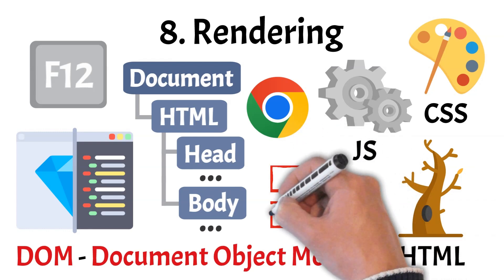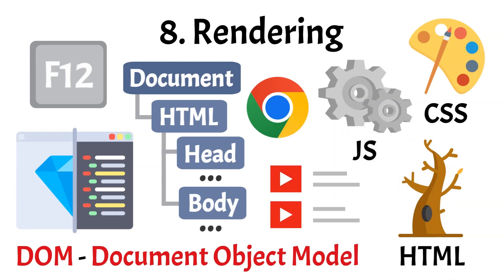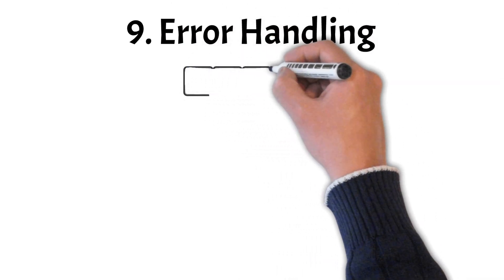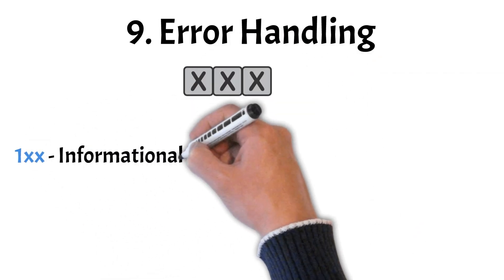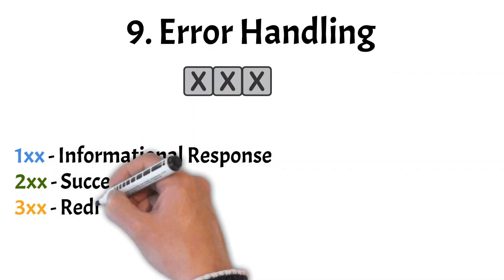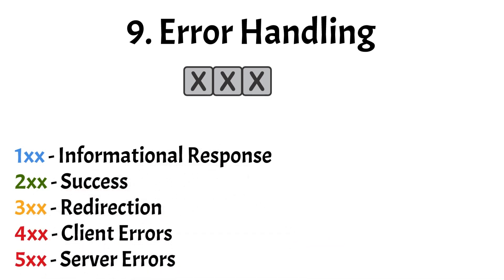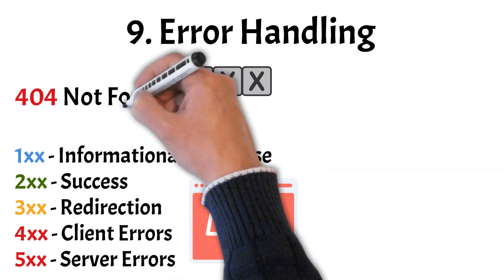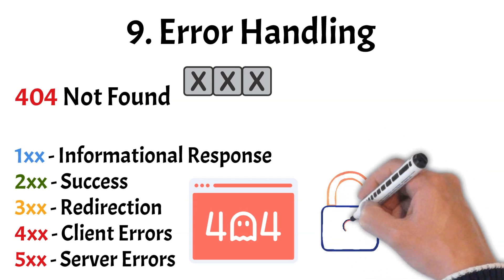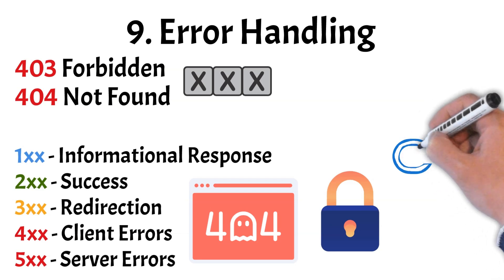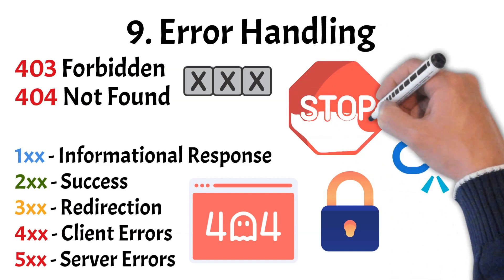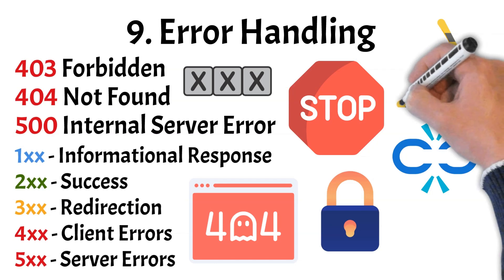After the browser sends out a request, it patiently waits for a response from the server. The first thing it receives is a status code — a three-digit number that summarizes what happened. A status code in the 200 series means success; 200 OK tells the browser the page loaded properly. 300 series codes signal redirection, pointing the browser somewhere else. 400 series codes mean there's a problem on the client side — 404 Not Found and 403 Forbidden are common examples. And 500 series errors come from the server, like 500 Internal Server Error when something goes wrong behind the scenes.